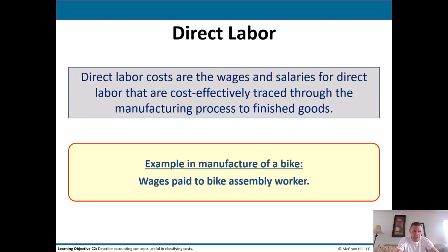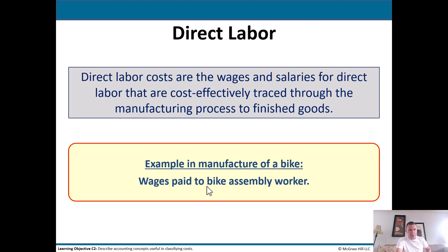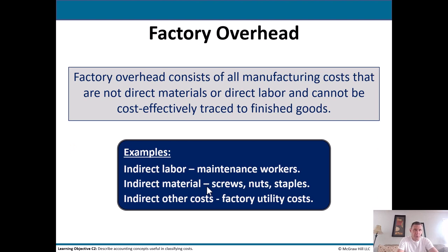Direct labor costs are the wages and salaries for direct labor that are cost-effectively traced through the manufacturing process to finished goods. The example in manufacturing a bike would be wages paid to the bike assembly worker. You've probably seen assembly lines on TV or YouTube — stuff moving down a line, workers putting on a steering wheel, somebody doing this, somebody doing that. Think of those people as direct labor, direct because we know exactly what they're working on.